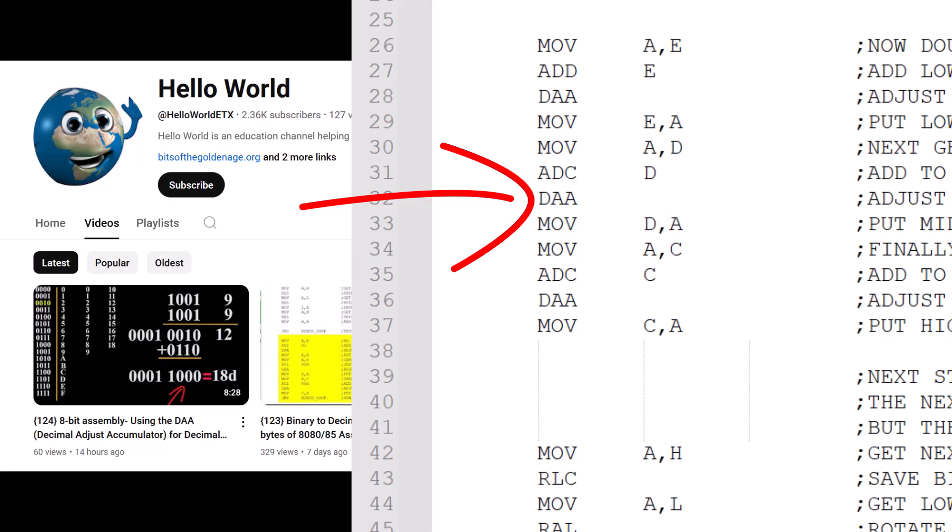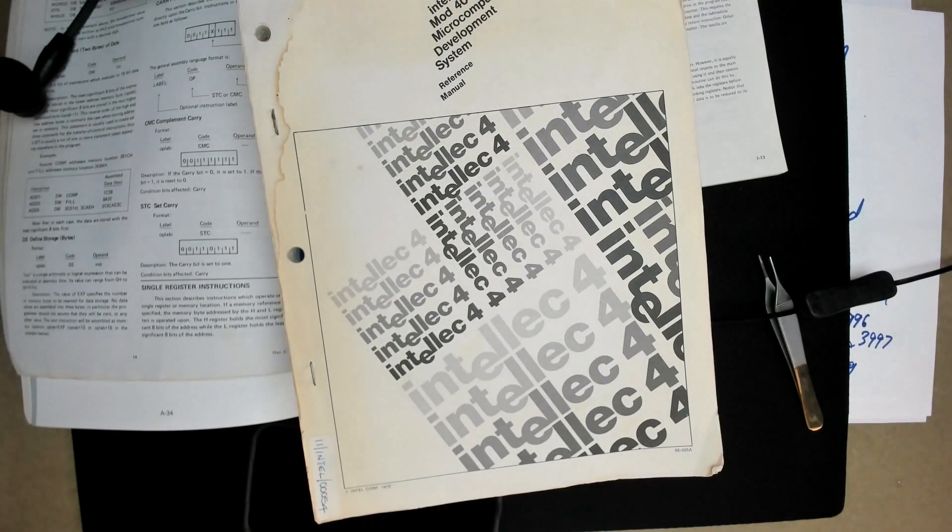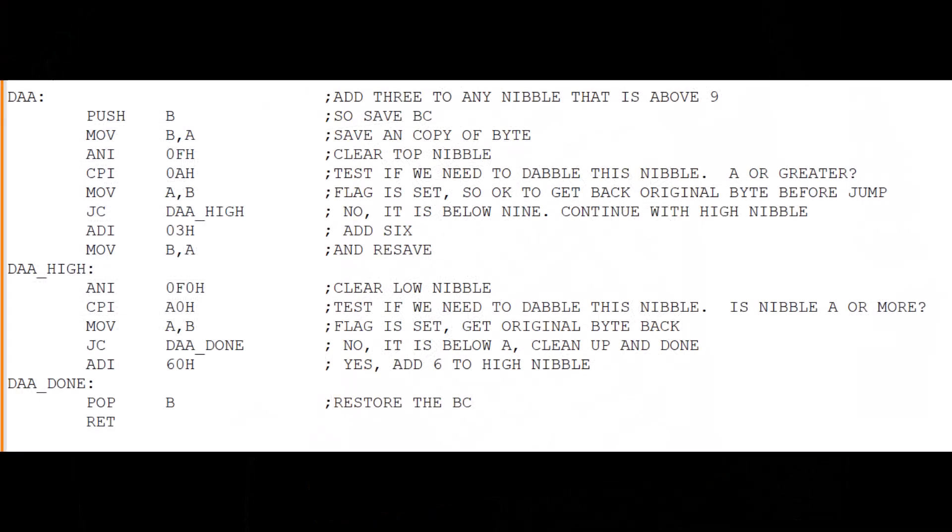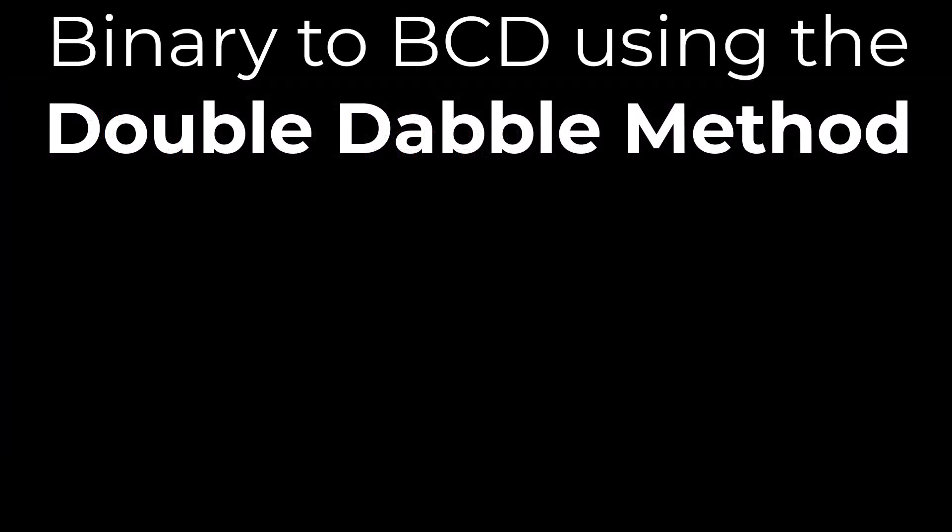But what do you do if the processor doesn't have a DAA instruction, like you're doing the 8008 or something earlier? We could just create and call a routine that does the equivalent, but there is a better solution and that's to use the double dabble method for the conversion because it's got a few built-in tricks up its sleeve.